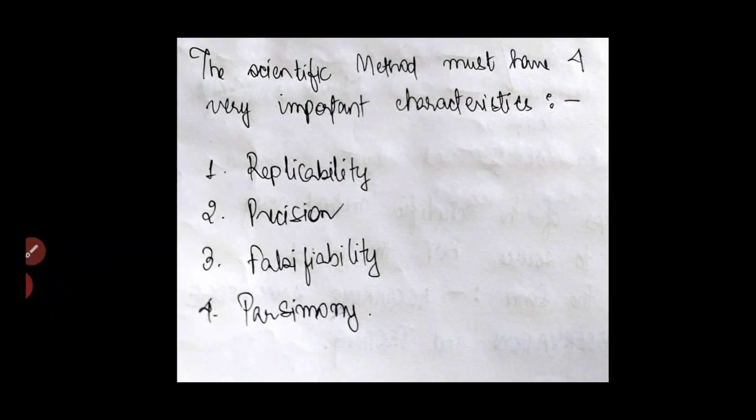So we have come to the most important part of our class today. The scientific method must have four very important characteristics. What are they? Replicability, precision, falsifiability and parsimony. So let us study them one by one.